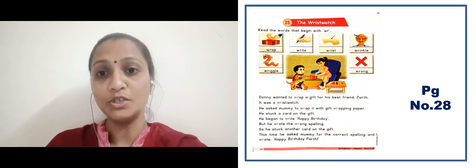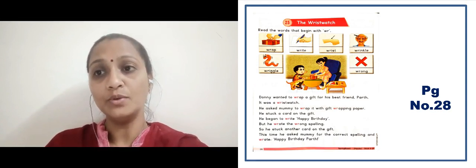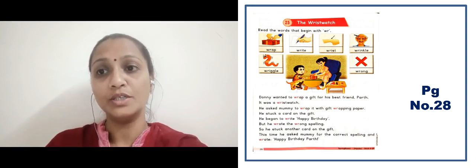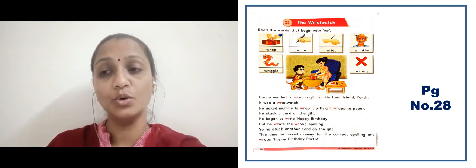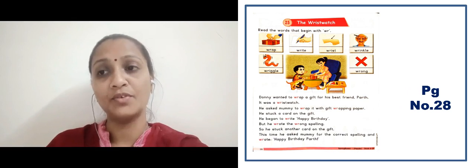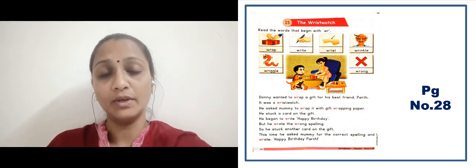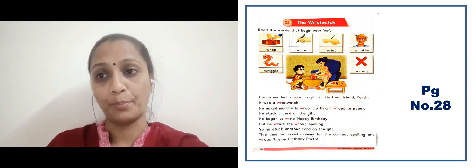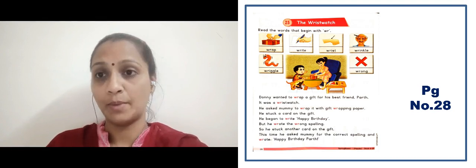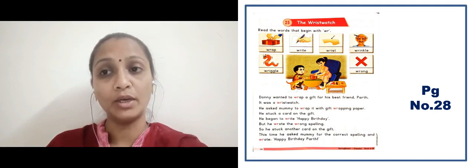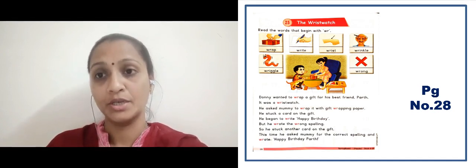In the next slide there is a topic 'The Rust Wash' on page number 28. Here we have to see the WR words. The first word is 'wrap' — wrap yaani koi cheez ko cover karna, jaise paper se gift ko wrap karte hain. After that, 'write' — right yaani likhna. After that, 'wrist' — wrist yaani hamare hath ka jo part hai. That is called wrist.